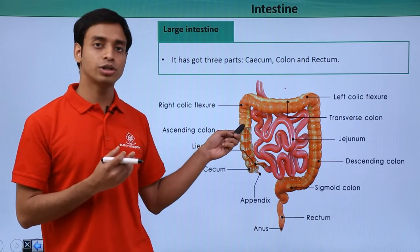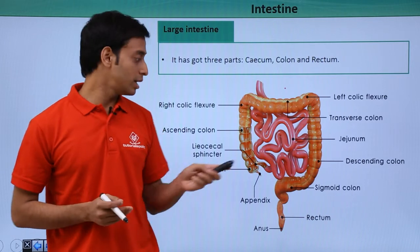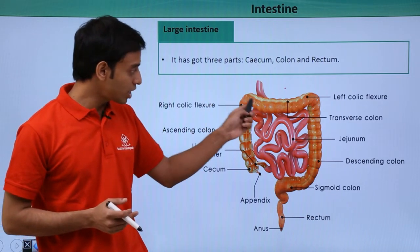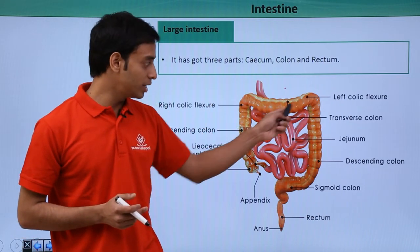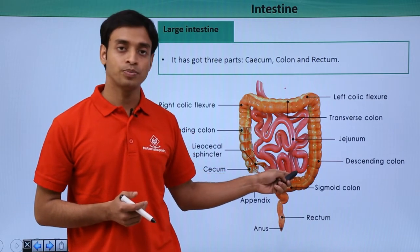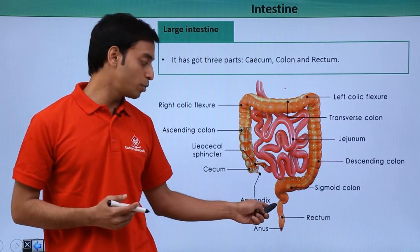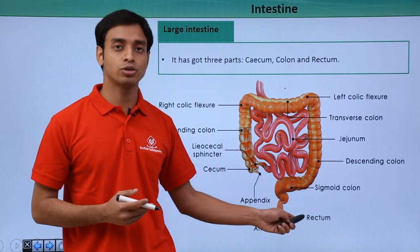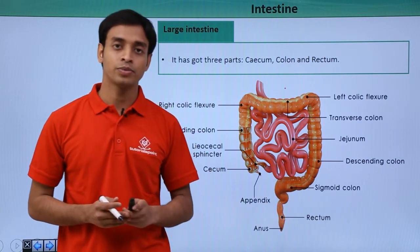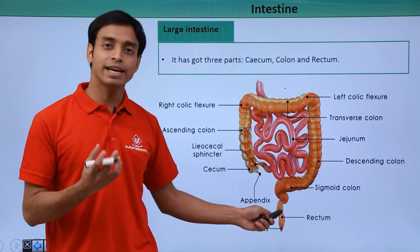The colon is divided into three important parts: the ascending colon, the transverse colon, and the descending colon. After the colon, it leads to the last portion of the large intestine, which is known as the rectum.